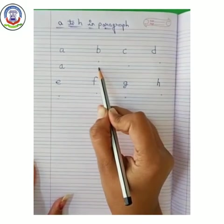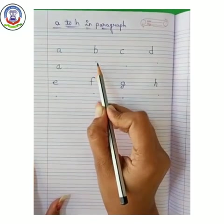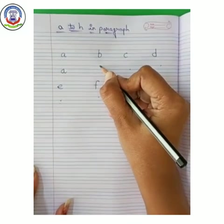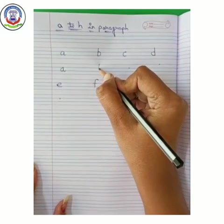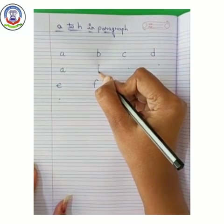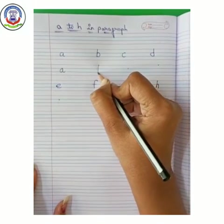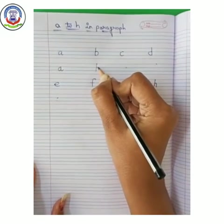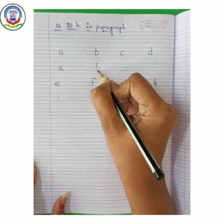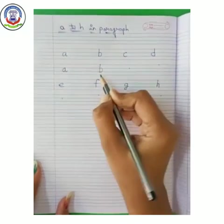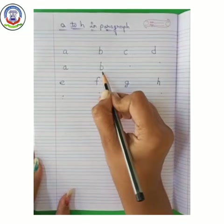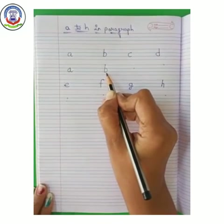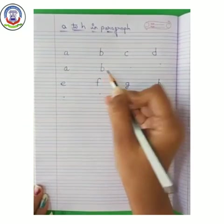Now, next letter — B. Make a standing line from red line to blue line. Now, make a curve in blue line. B. B says B — Ball.